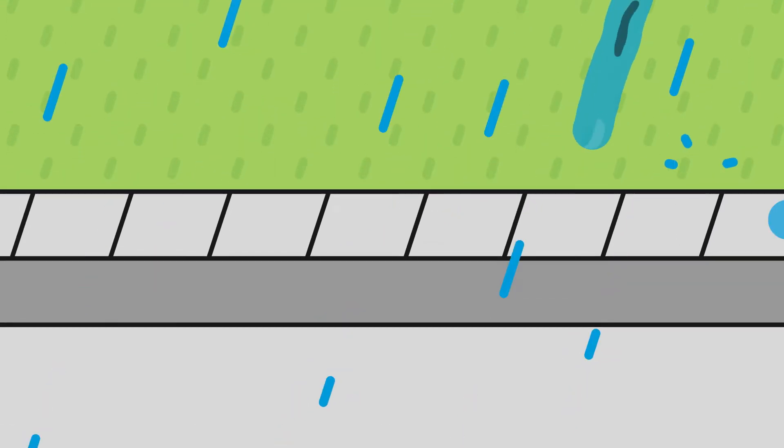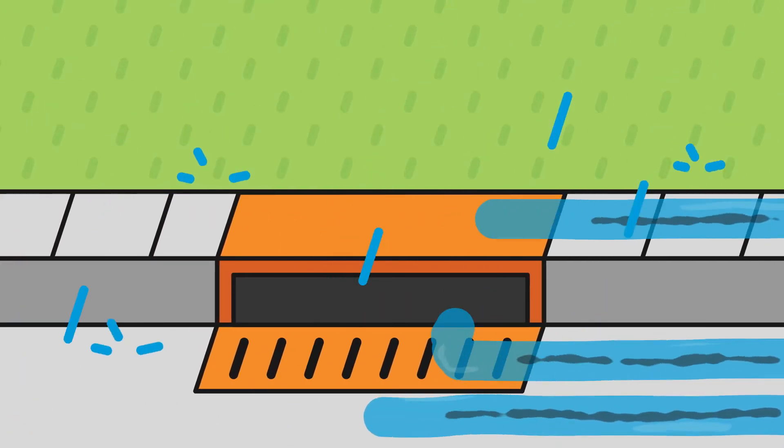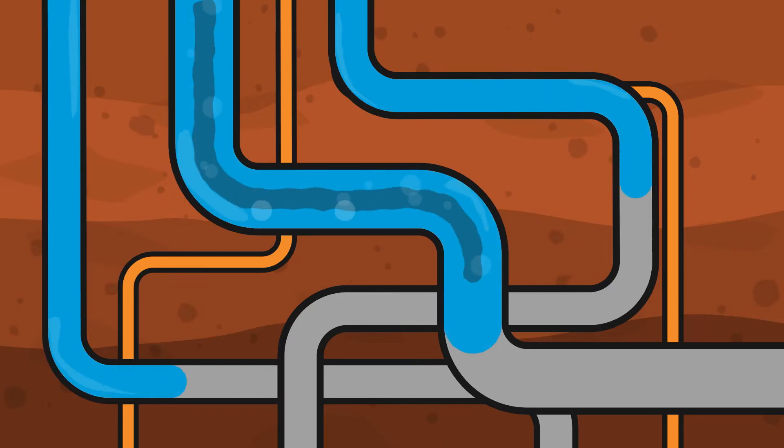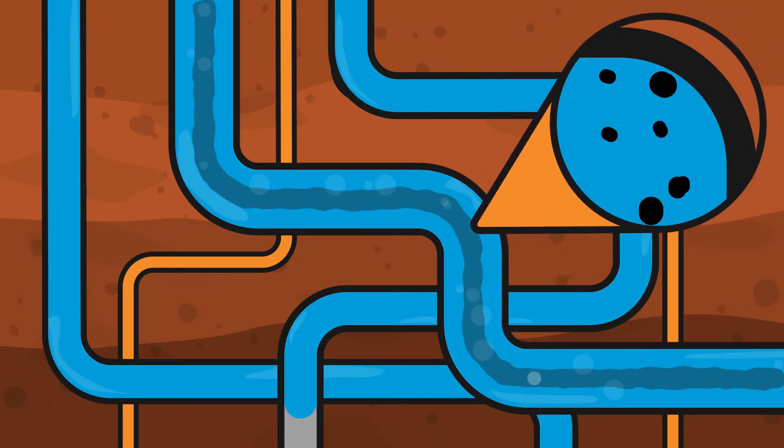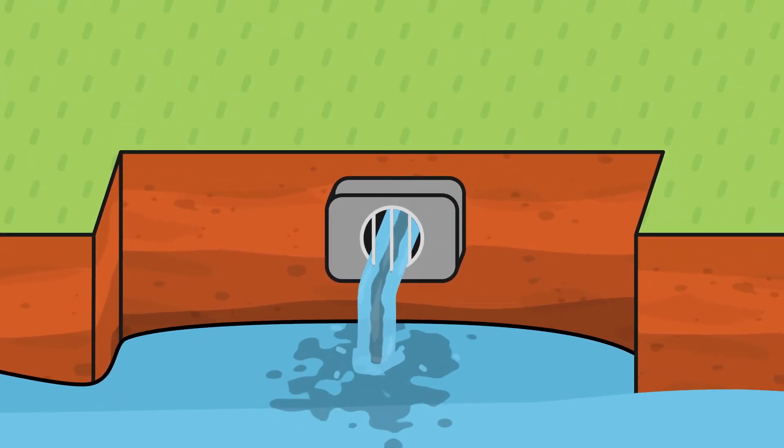When rain or water hits hard surfaces like pavement, it creates stormwater runoff. This picks up nasty pollution and drains out to the rivers, streams, and lakes that hold our drinking water. This pollution is not treated or removed, so it's up to each of us to keep it clean and fresh from the start.